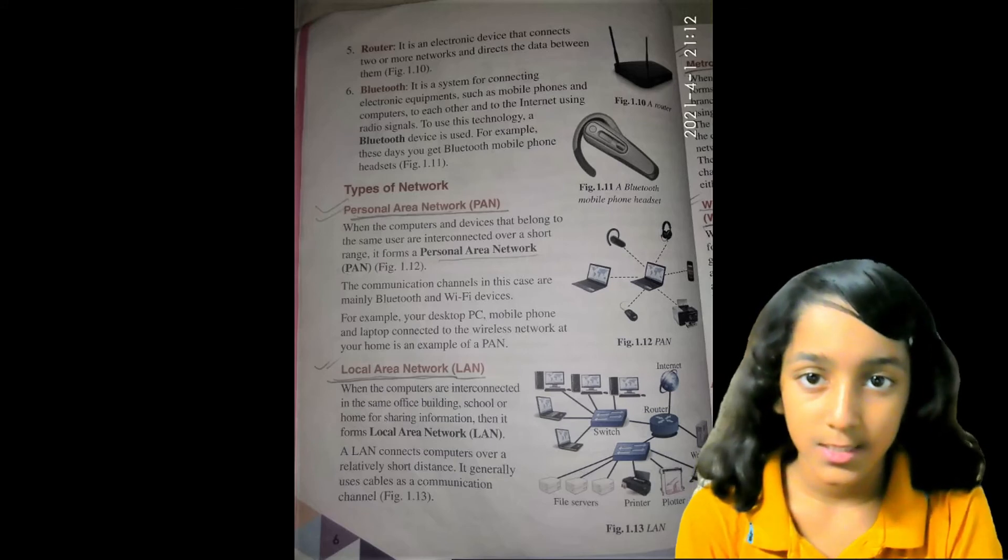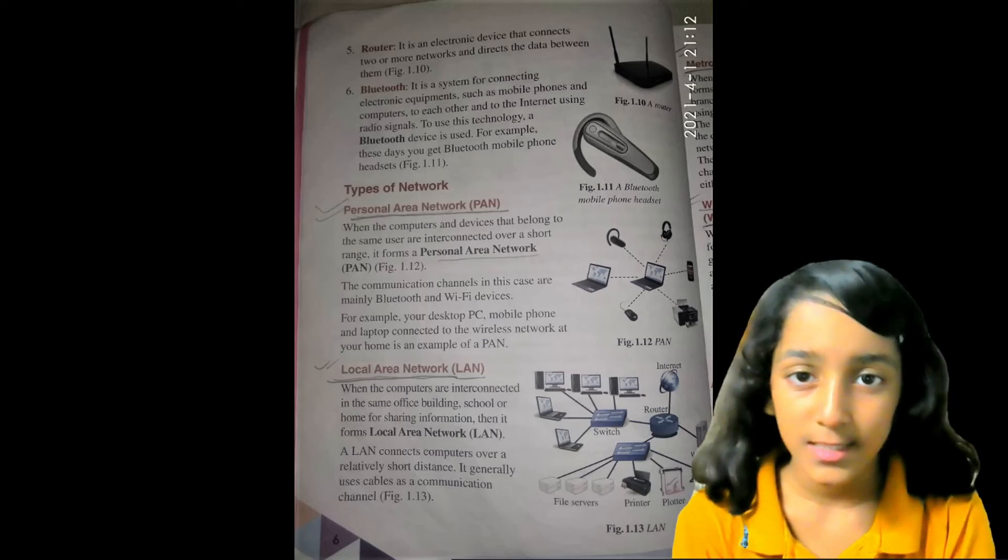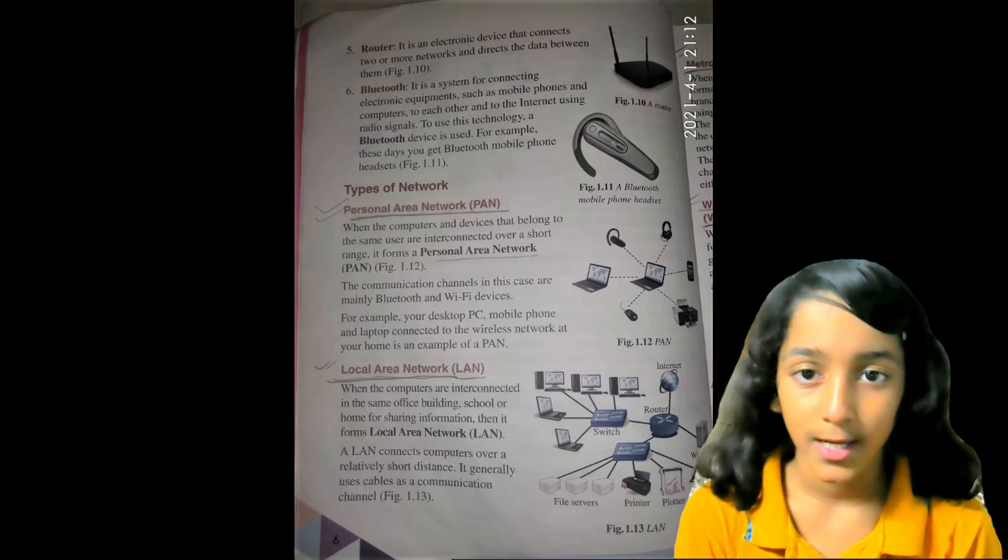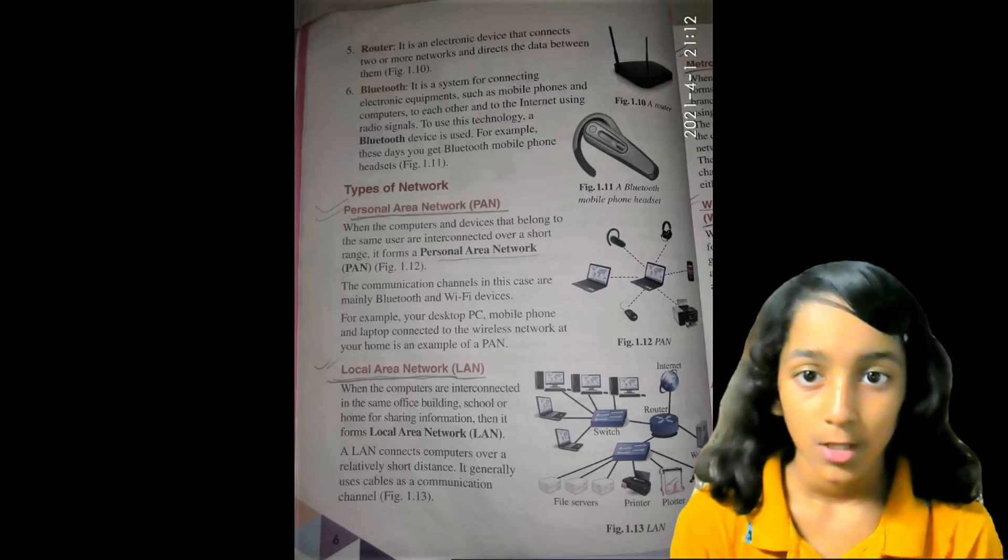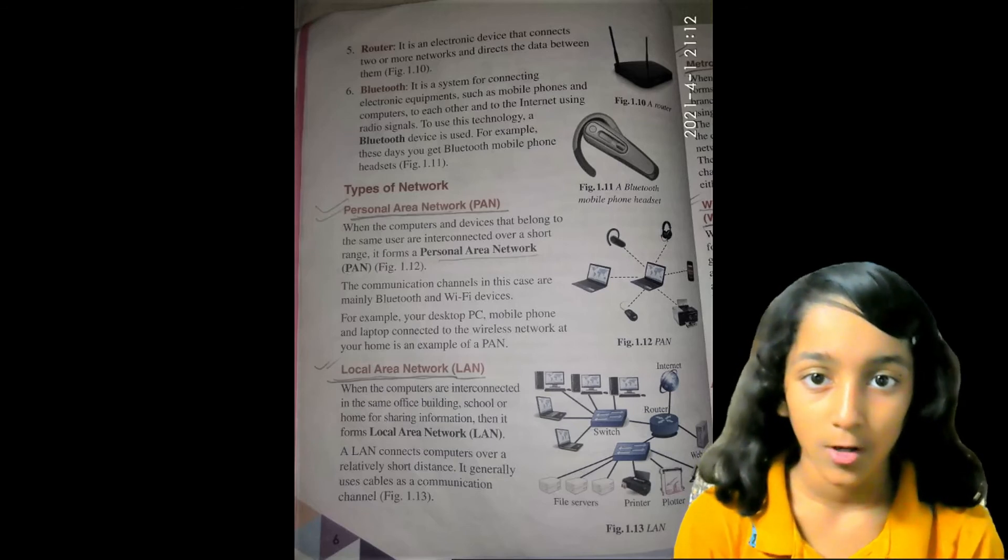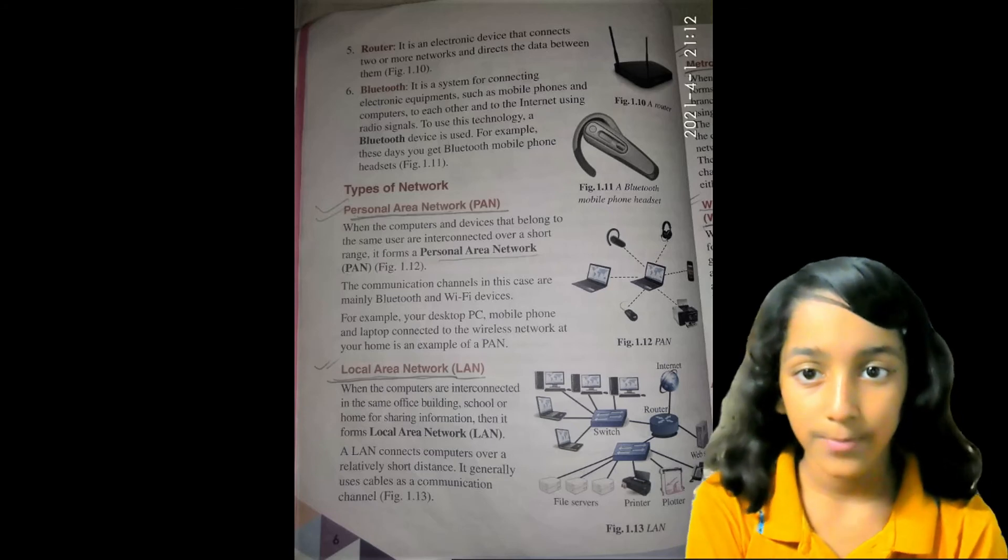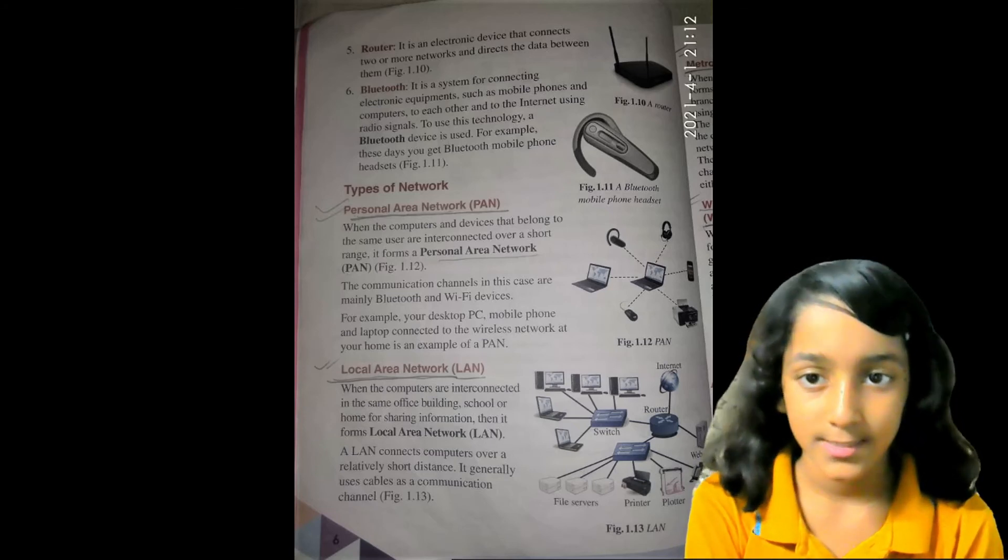Router: It is an electronic device that connects two or more networks and directs the data between them. Bluetooth: It is a system for connecting electronic equipment such as mobile phones and computers to each other and to the internet using radio signals. To use this technology, a Bluetooth device is used. For example, these days you get Bluetooth mobile phone headsets.